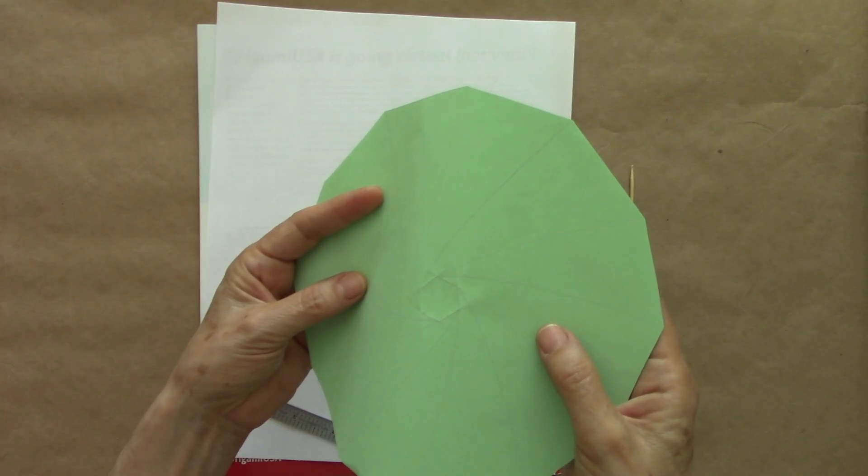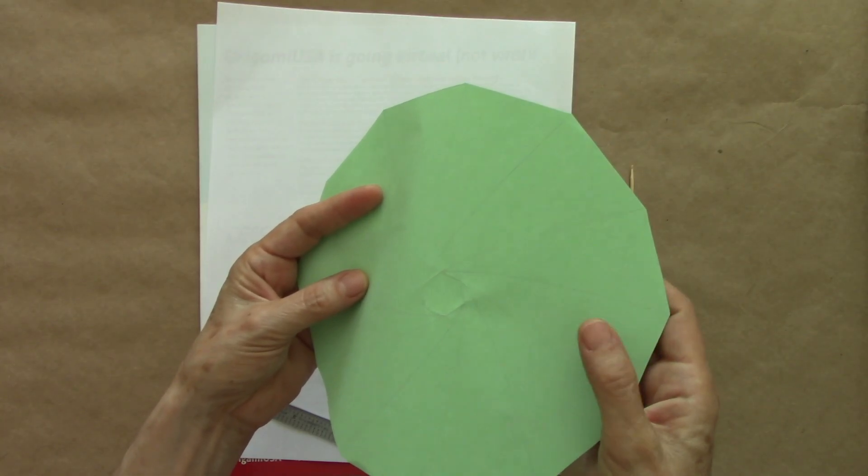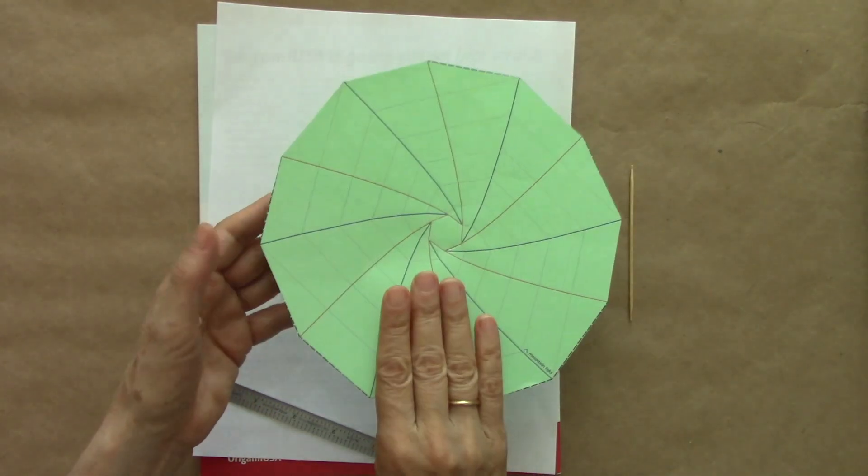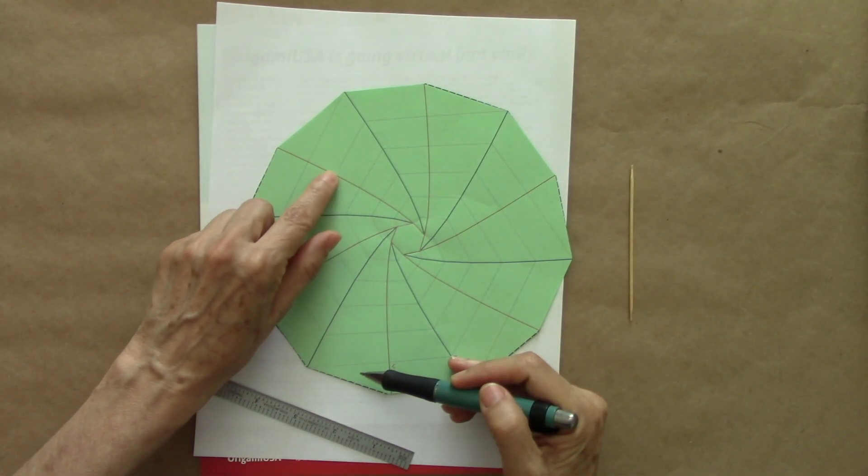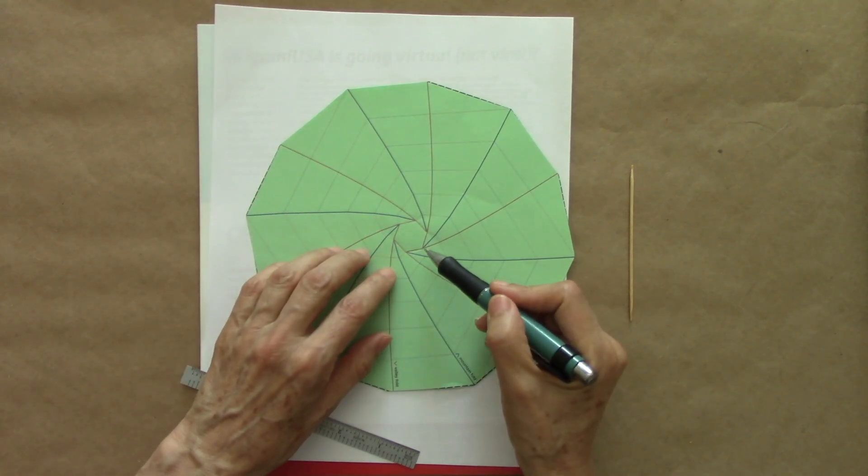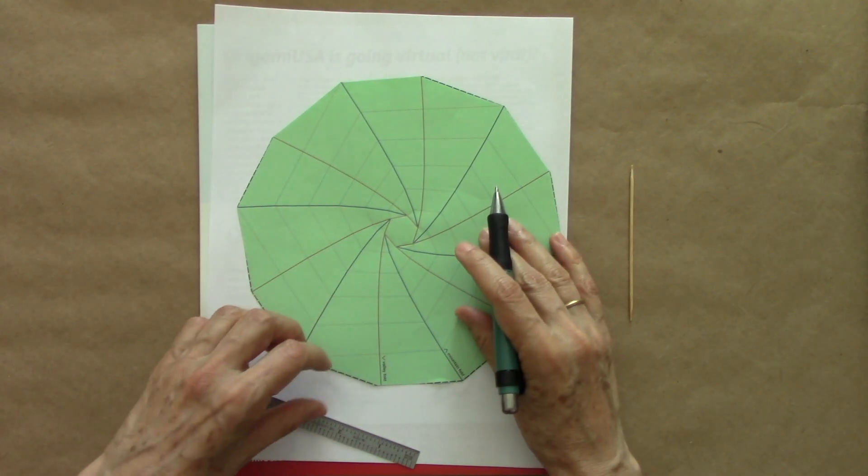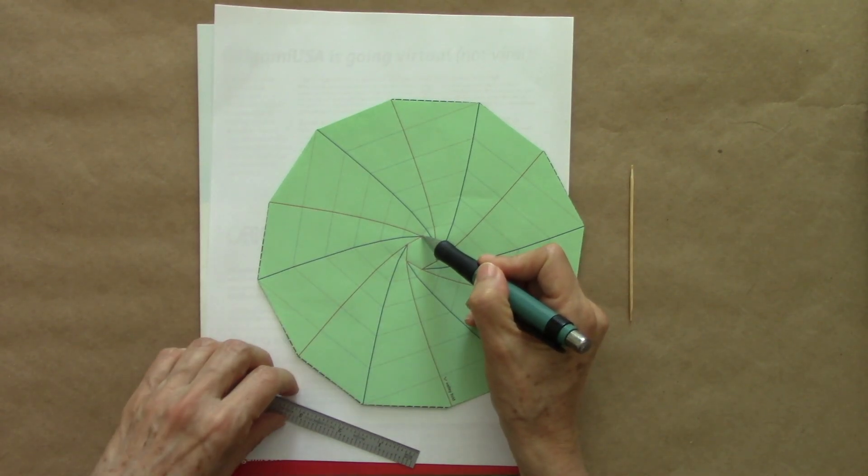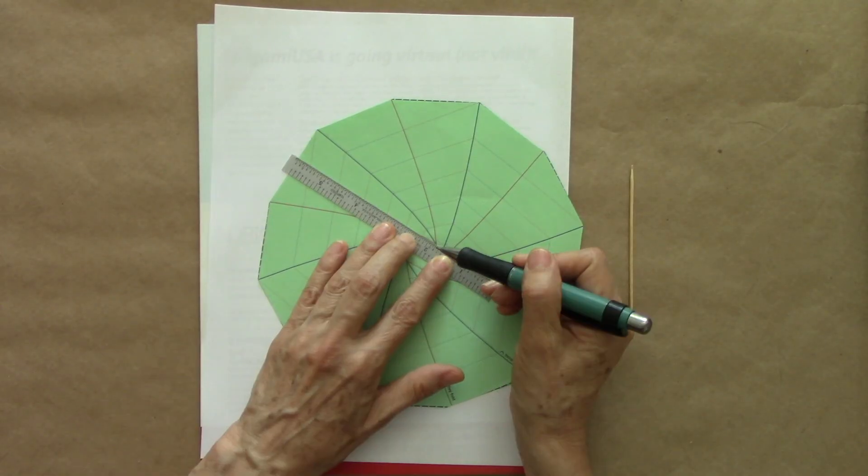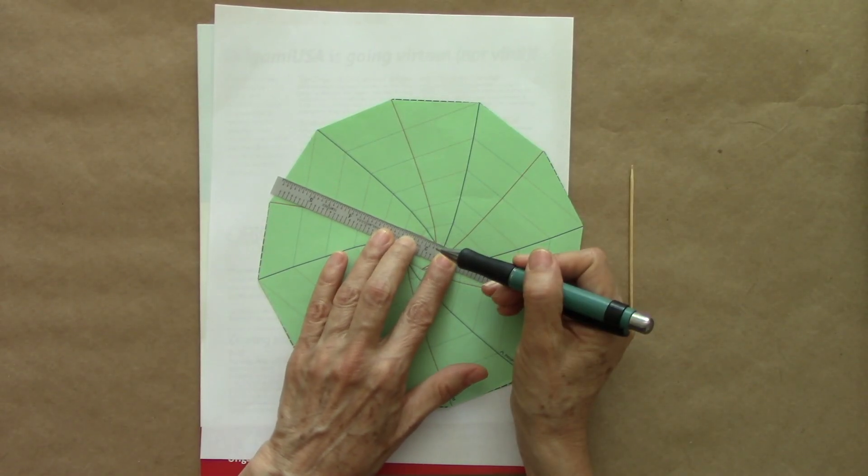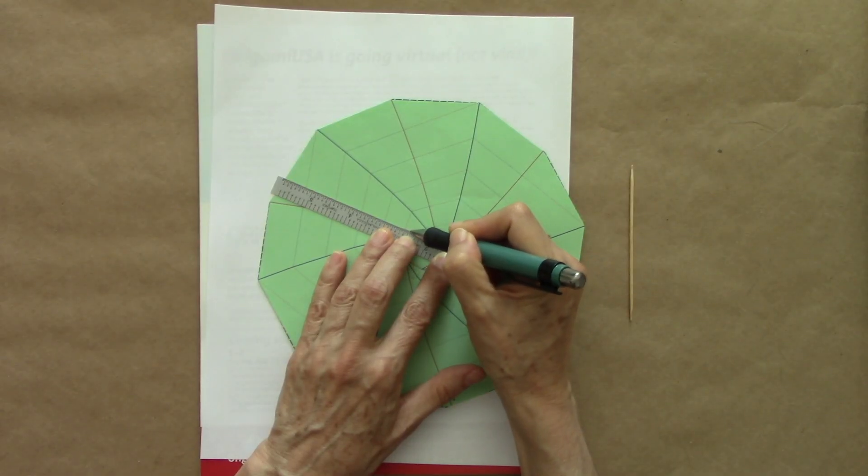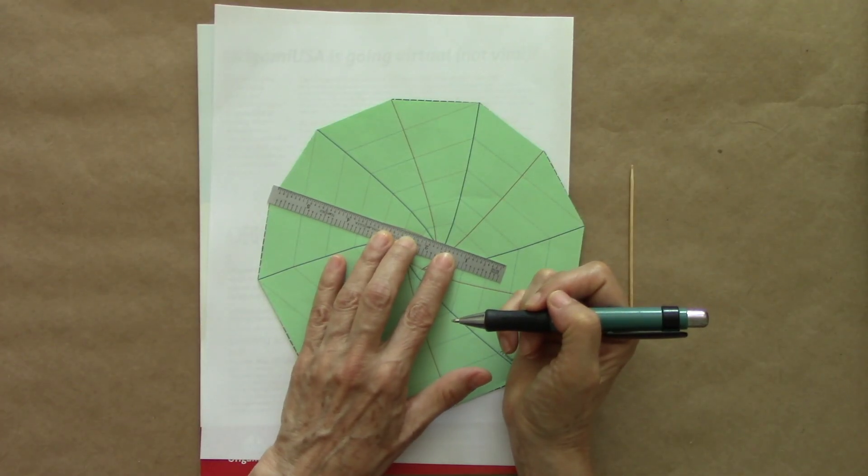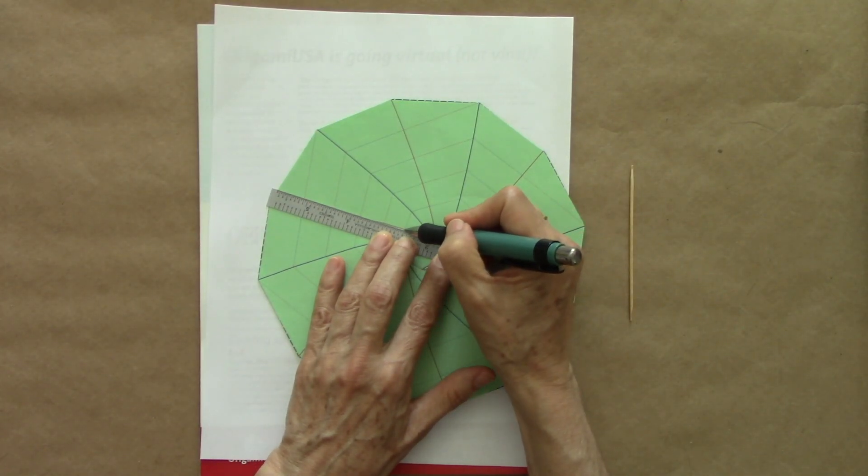So we see the hexagon at the center. Turn the paper over again. We are going to score all these red lines as valley folds. They have to be valley folds on this side. So I begin by scoring this one. Make sure that you move your ruler so that the angle is right, and you score section by section, because you need to be rotating that ruler.